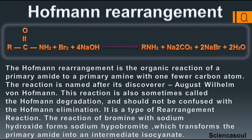The Hoffmann Rearrangement is the organic reaction of a primary amide to a primary amine with one fewer carbon atom. The reaction is named after its discoverer August Wilhelm von Hoffmann. This reaction is also sometimes called the Hoffmann degradation and should not be confused with the Hoffmann elimination.